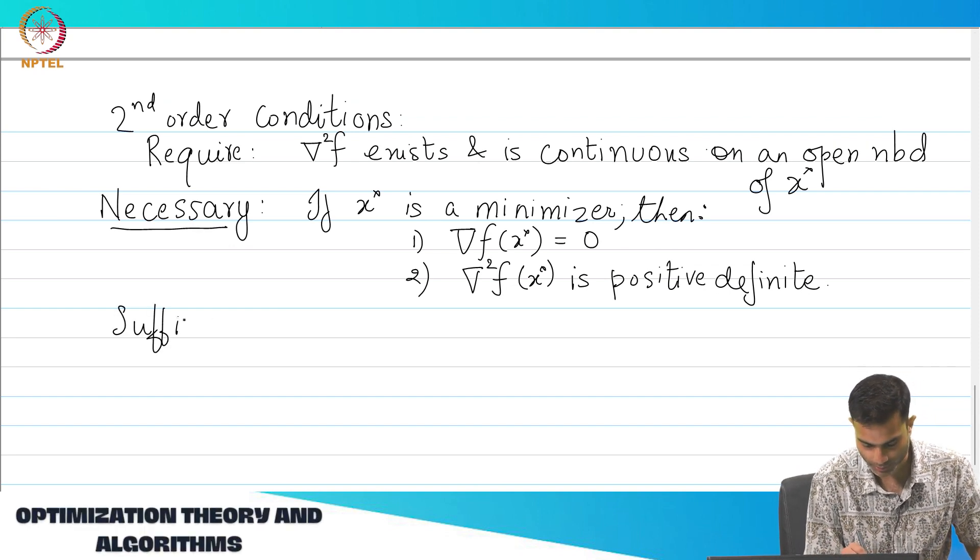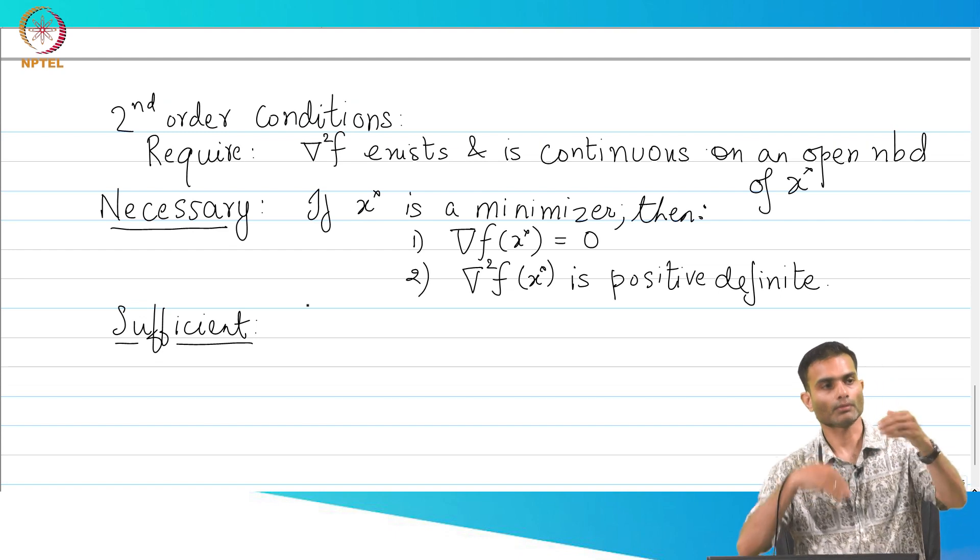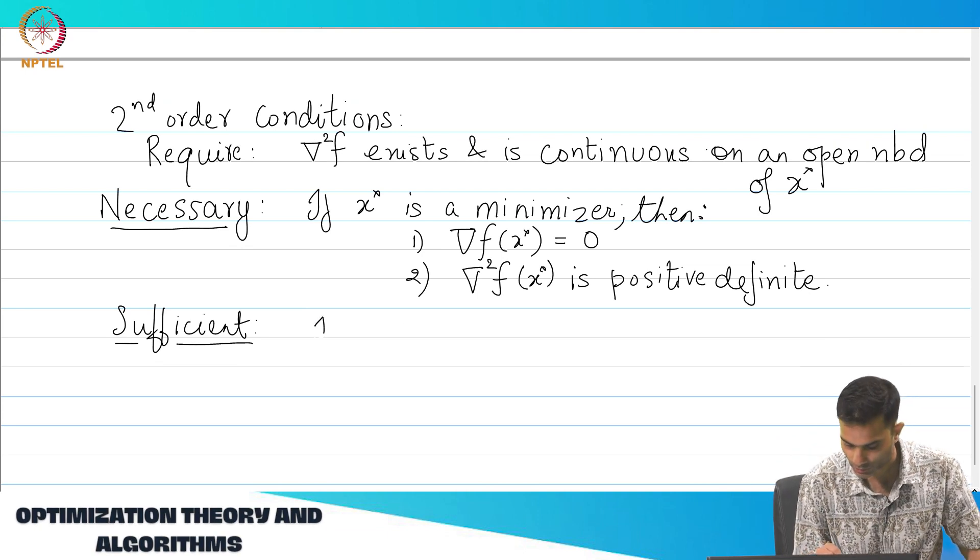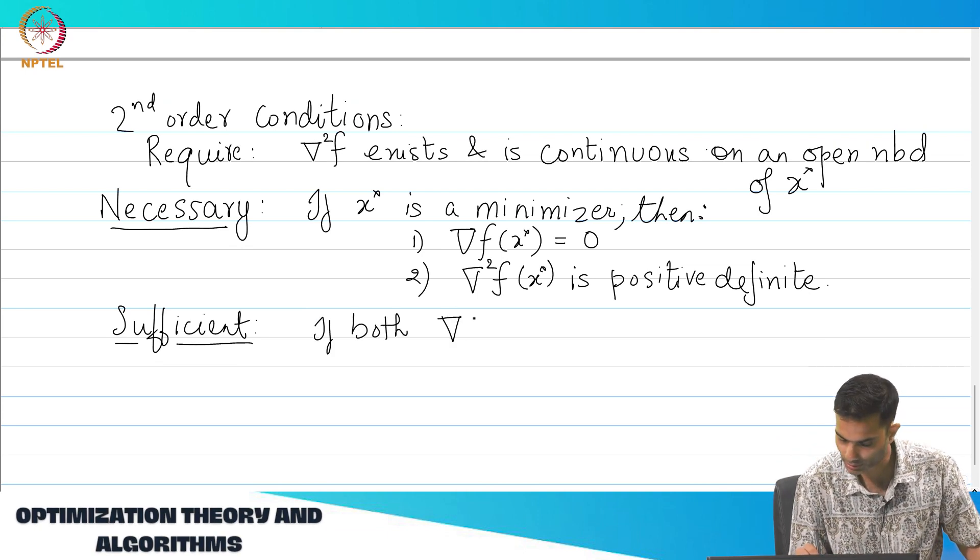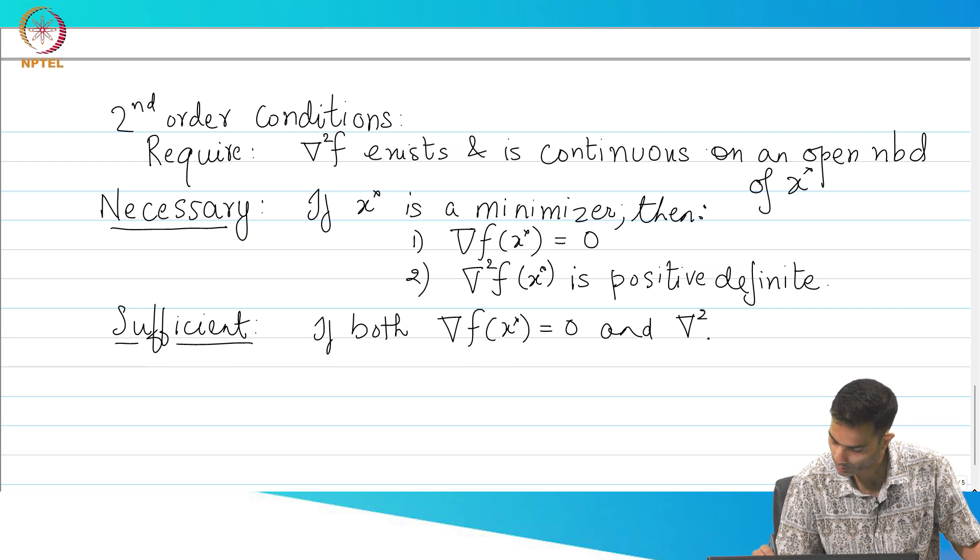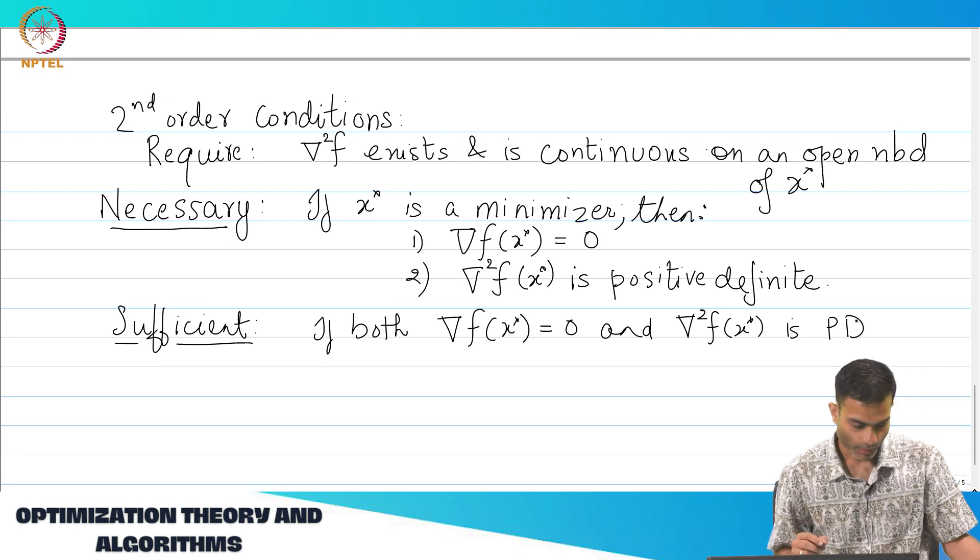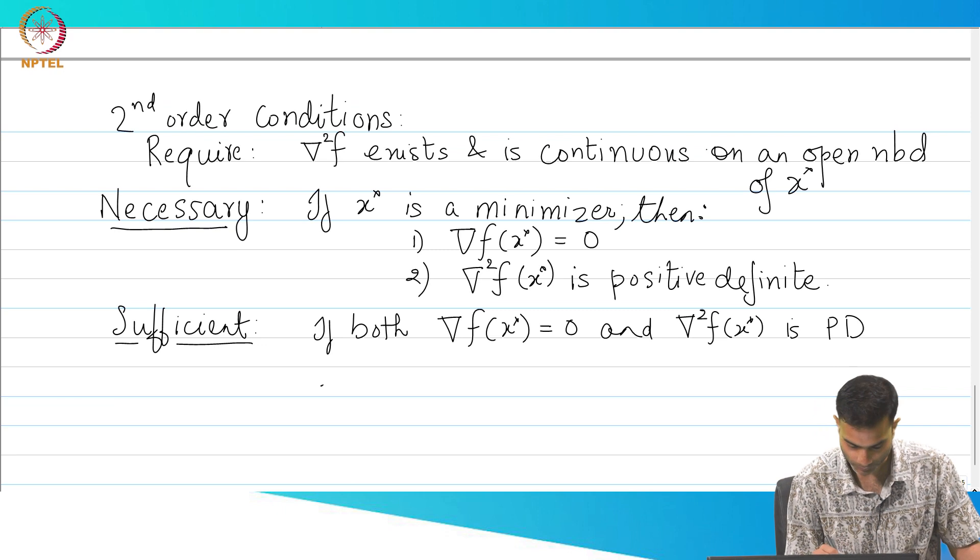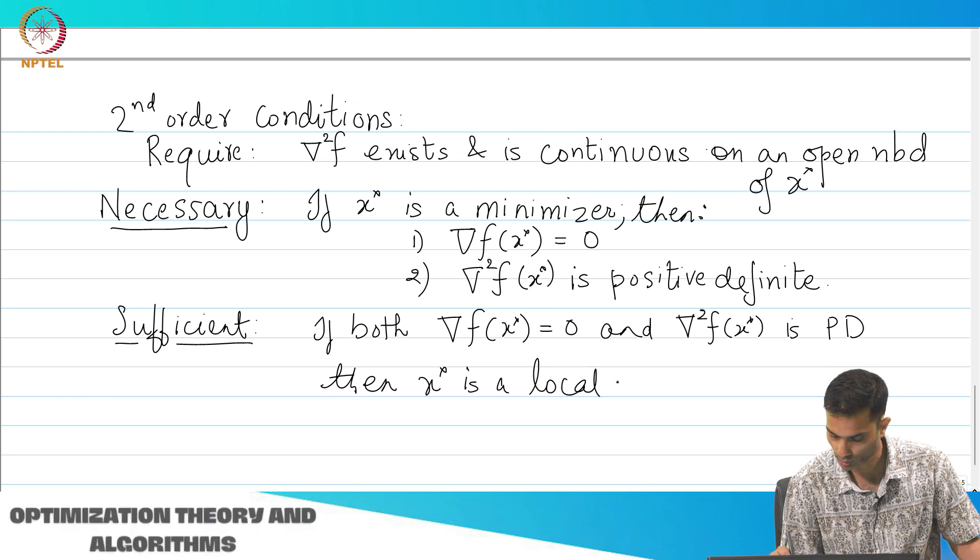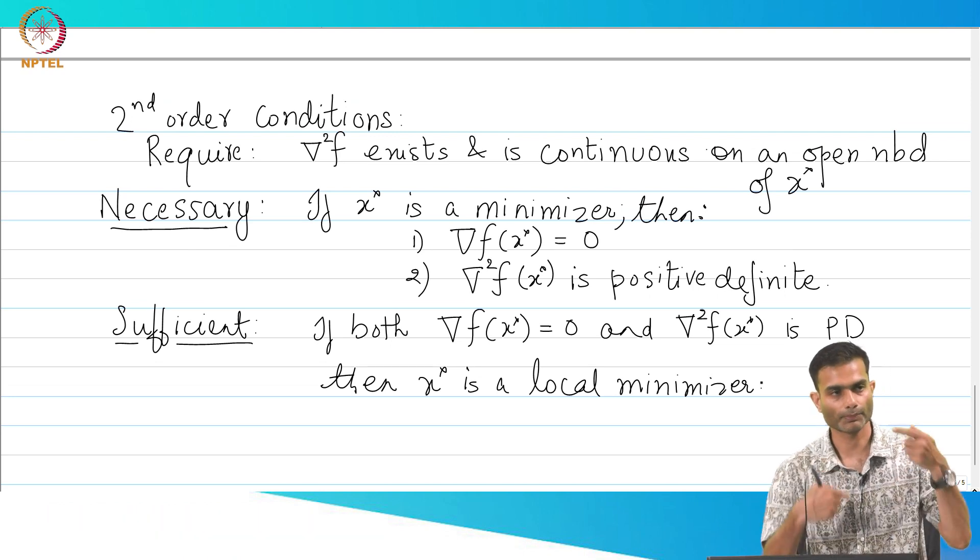Now, let us come to the sufficient conditions. Now, let us come to the sufficient will work the reverse way. Here I had an if and a then. Now, I will start with the then and come to the if part. So, if both this and the Hessian at x* is positive definite, then x* is a local minimizer.